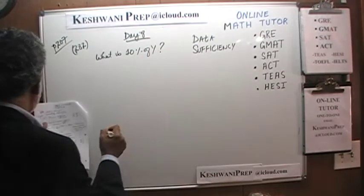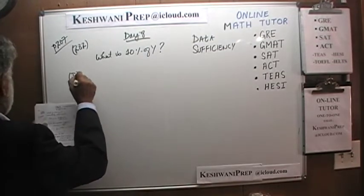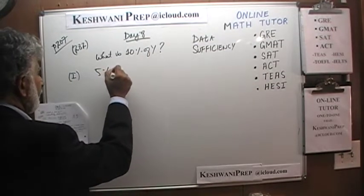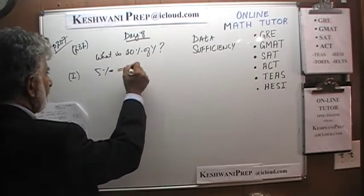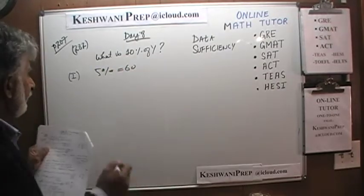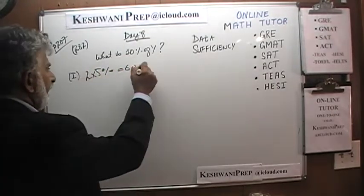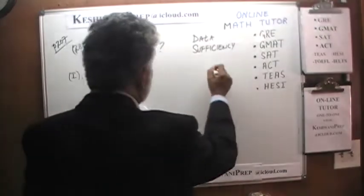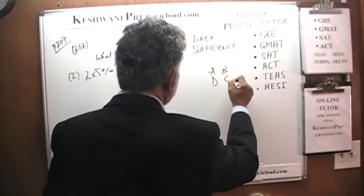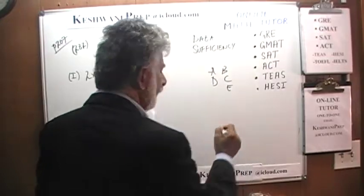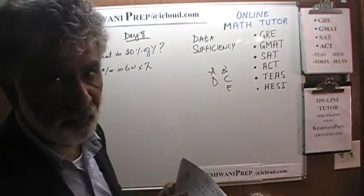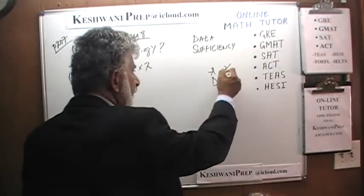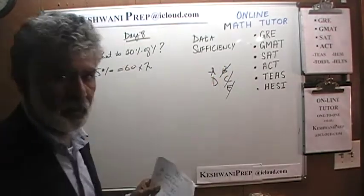Simple, straightforward question. The first statement tells us that 5% equals 60. Well, if 5% equals 60, then obviously 10% will equal 60 times 2. Now that we have established that the first statement by itself is sufficient, we know the answer cannot be B, C, or E. It will have to be either A or D.